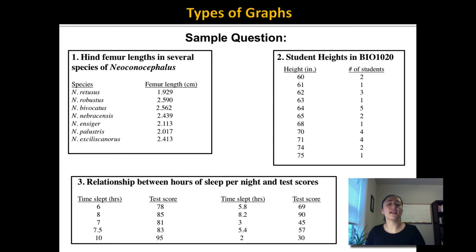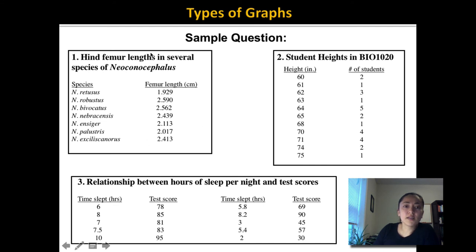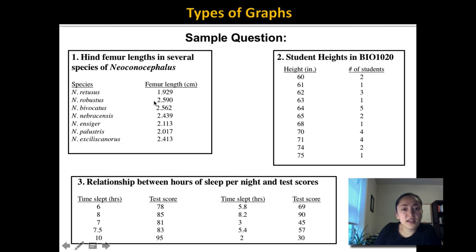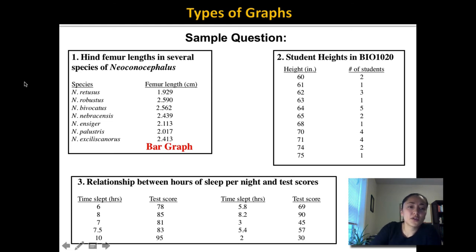Looking at the first example: hind femur length in several species of Neoconocephalus. Here we can see different species and their femur length. These are categories, so you would use a bar graph. The species categories would go on the x-axis, the femur length would go on the y-axis, and you would have a bar to represent each species. The next example is student heights in BIO 1020 — we have height values and the number of students at each height. This is telling us the frequency of students at each height value, so you would use a histogram.